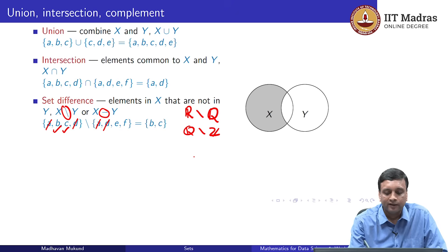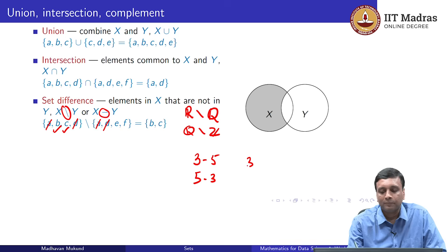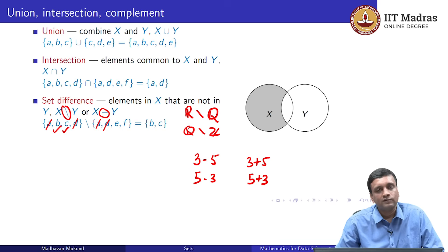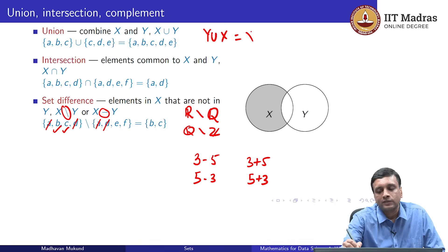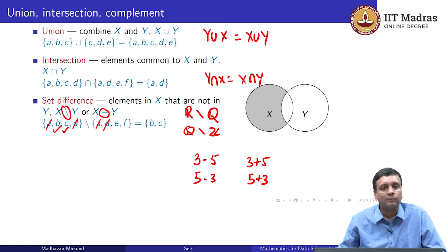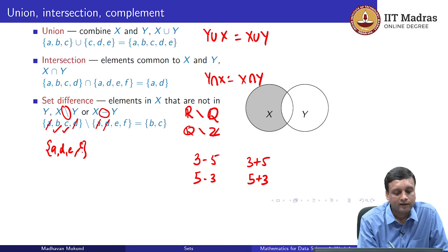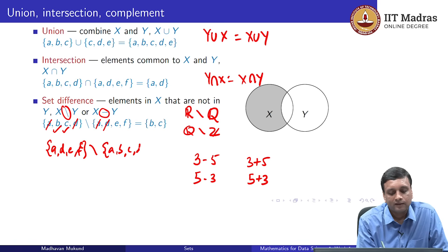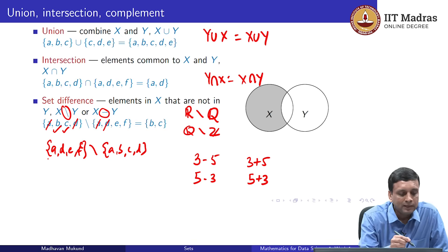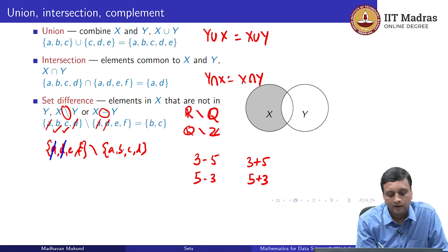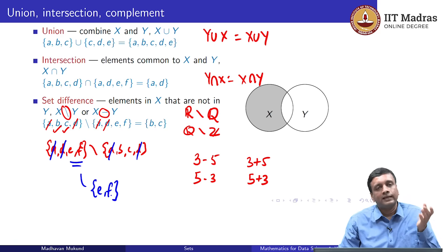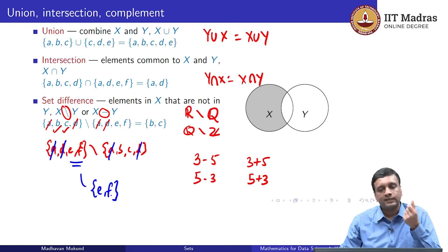Set difference is not symmetric, just like subtraction — 3 minus 5 is not the same as 5 minus 3, unlike 3 plus 5. Union and intersection are symmetric: Y union X equals X union Y, and Y intersection X equals X intersection Y. But set difference is not symmetric: if I take {A, D, E, F} minus {A, B, C, D}, then A and D disappear because they are common, and what survives is {E, F}. So X minus Y is not the same as Y minus X. The picture shows: take everything in X, remove everything in the intersection, and that gives X set minus Y.